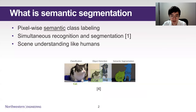So what is semantic segmentation? In short, it is pixel-wise labeling based on semantic, or language meaning. If you look at the picture here, different from classification and object detection, semantic segmentation is simultaneously recognizing the object and segmenting the object shape. It is a way of mimicking how humans understand the scene. This survey mainly focuses on image semantic segmentation.